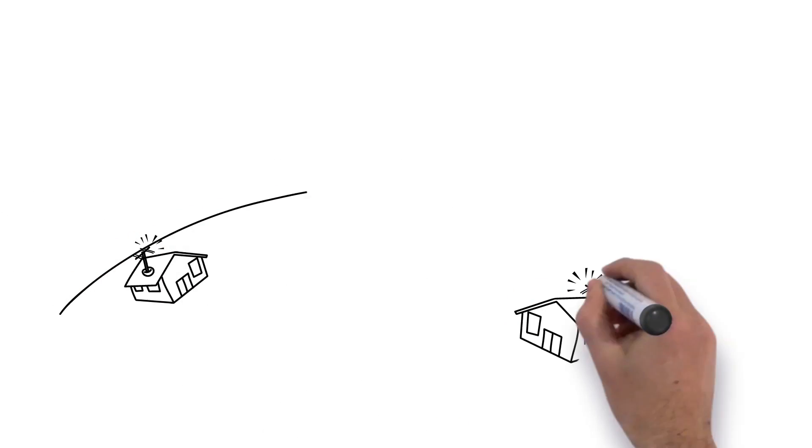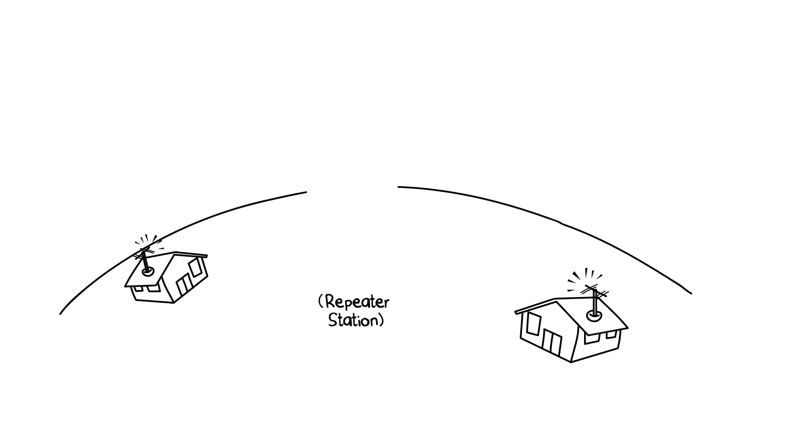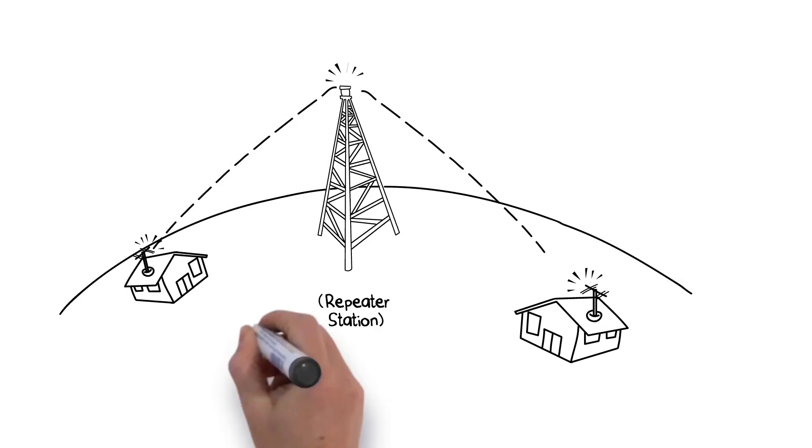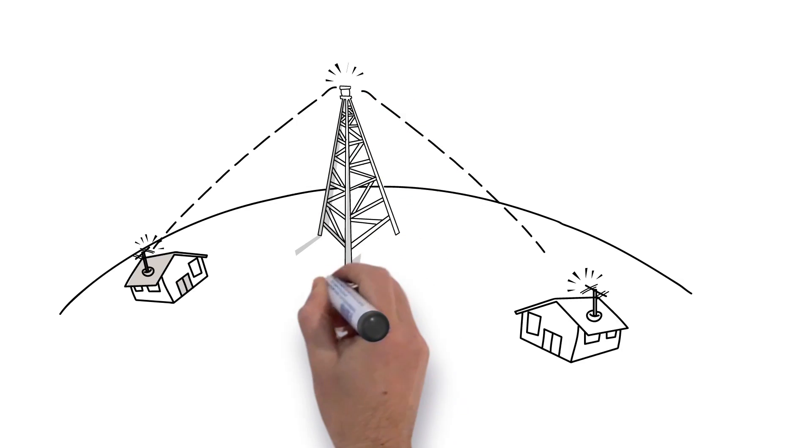To overcome this, legacy radio systems use what's known as a repeater, which is a high-power transmitter usually located on a tower that provides more flexibility by allowing the signal to be rebroadcast or hop once between transmitter and receiver.